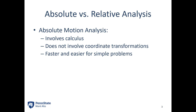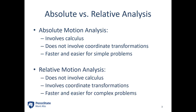Comparing these two methods: absolute motion analysis involves calculus, particularly taking the derivative of some larger functions. It does not involve coordinate transformations, so everything is going to be in x and y coordinates from the start, and it's generally faster and easier for simple problems. Relative motion analysis does not involve calculus — we're simply plugging in pieces of an equation — but it does involve coordinate transformations from r and theta directions into x and y. I find relative motion analysis faster and easier for complex problems with many stages to the motion.